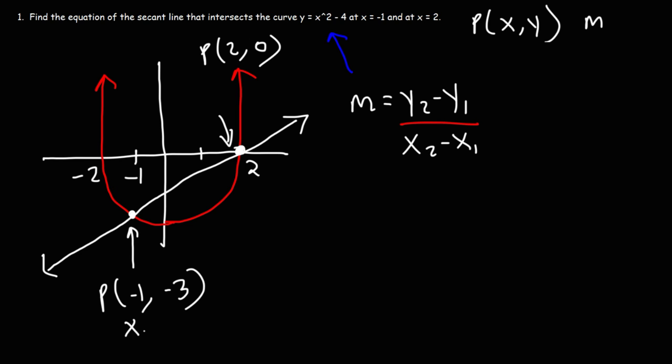m is equal to y2 minus y1 divided by x2 minus x1. So let's call negative 1 x1 and y1 is going to be negative 3. 2 is going to be x2, 0 is going to be y2. So y2 minus y1, that's 0 minus negative 3. And then x2 minus x1, that's going to be 2 minus negative 1.